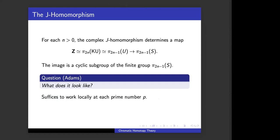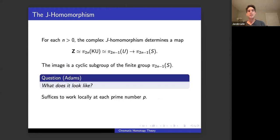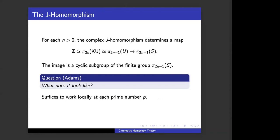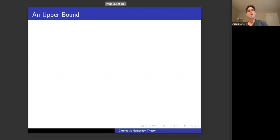To understand the answer, it's best to think one prime at a time. The image of the J-homomorphism is a finite abelian group, hence a sum of finite abelian p-groups for different primes p. Let's focus on the contribution from a single odd prime. First, let's talk about getting an upper bound for what the image of this J-homomorphism looks like. For this I want to remind you of a feature that complex K-theory has.